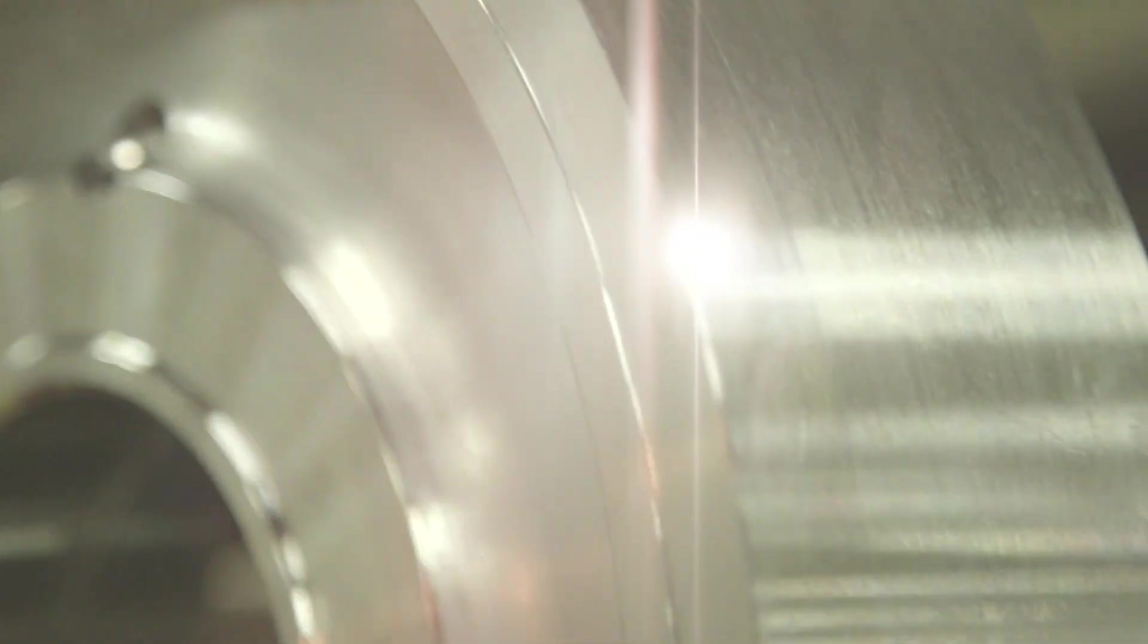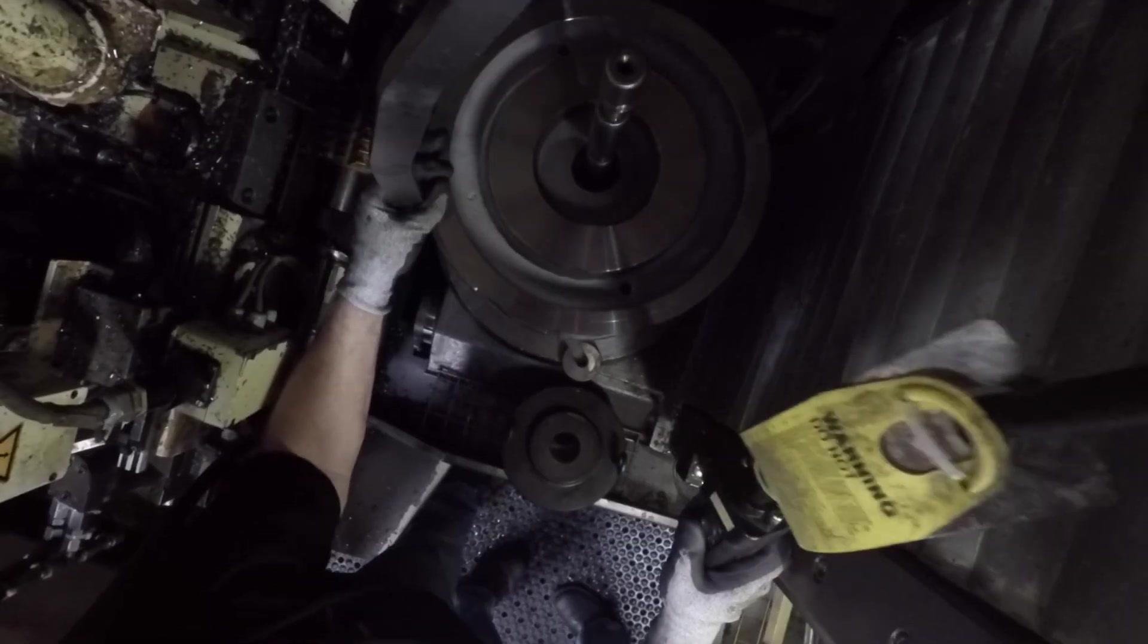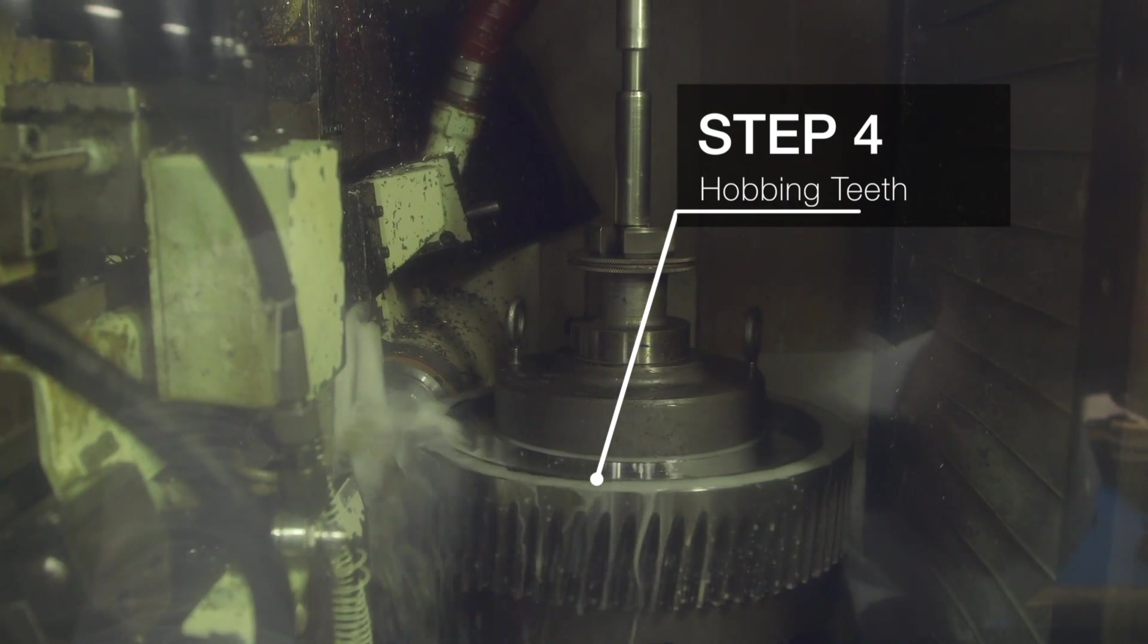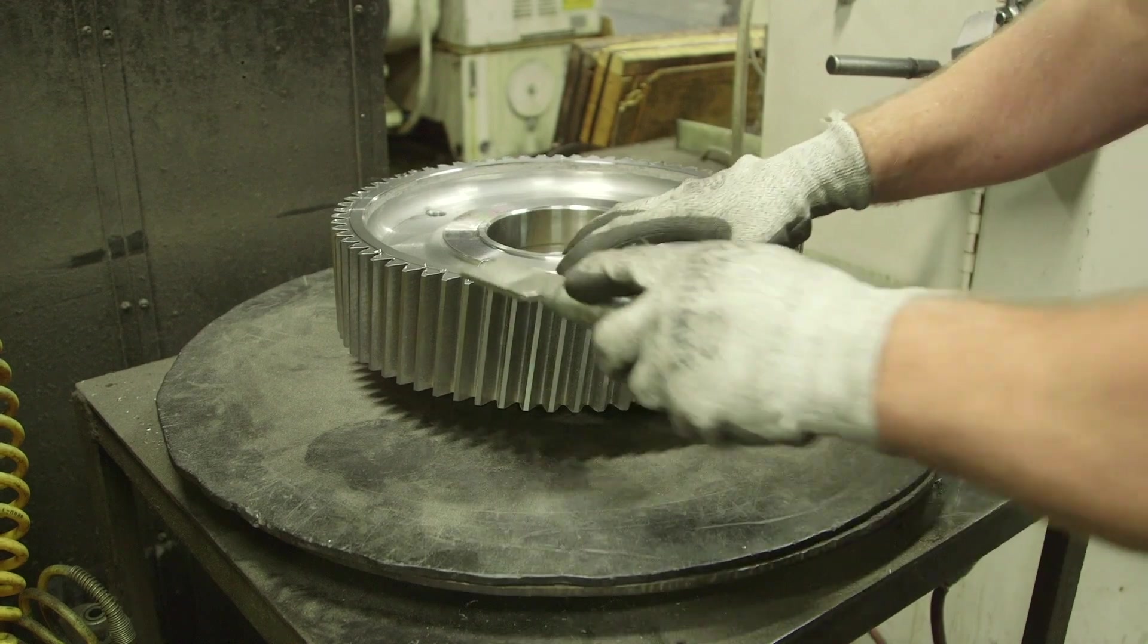Next up, cutting the teeth. The teeth are the most important feature of the gear because they create the precise ratios of power transfer between rotating elements and drive the transmission.